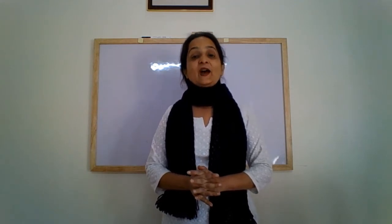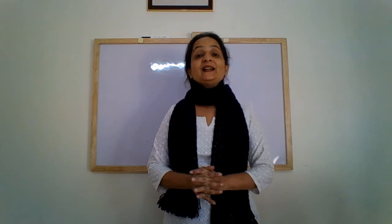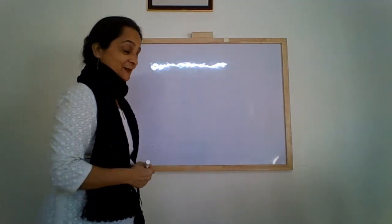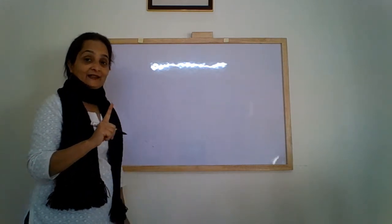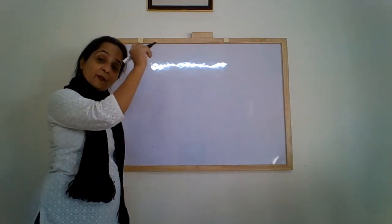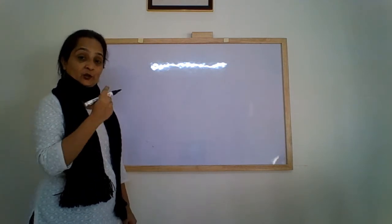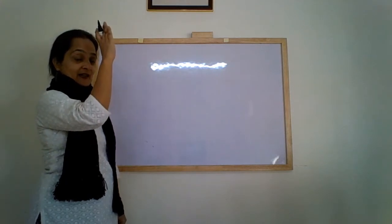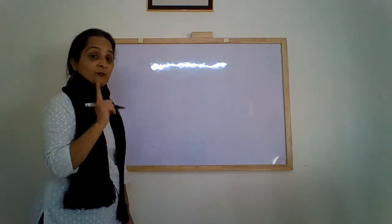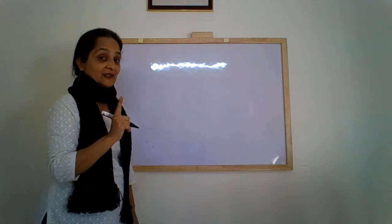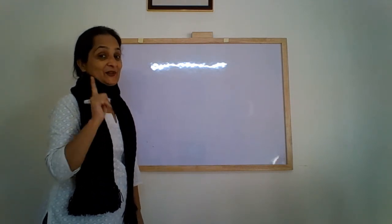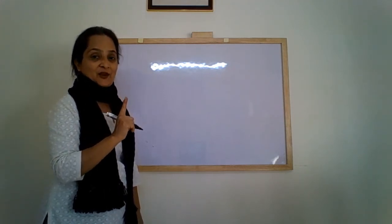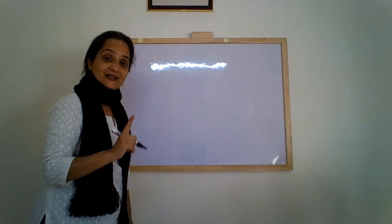And now let us revise the writing of these letters. Remember: a standing line always goes from up down. We also have forward curve, backward curve, standing line, and slanting line. I hope you are practicing everything — you should be practicing every day. So let's begin with the letter D.